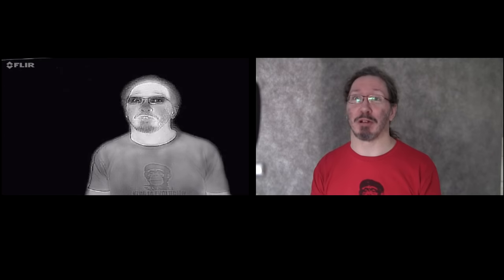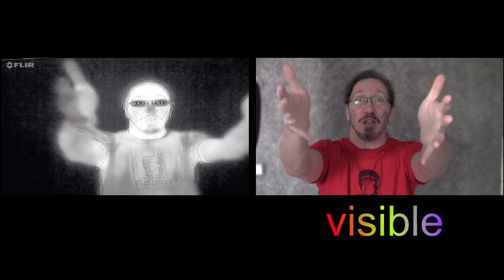This is thermal imagery or infrared imagery, and what it does is essentially give you the superpower to see things that you wouldn't normally see. For instance, your eyes normally see in the visible part of the spectrum, which you can see here, the colors and everything.